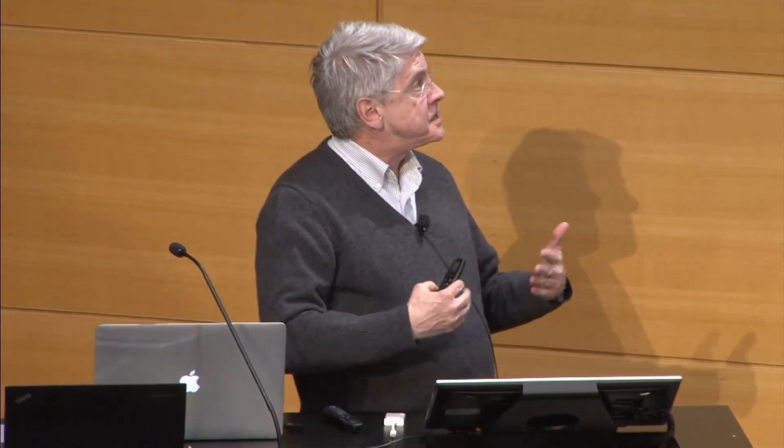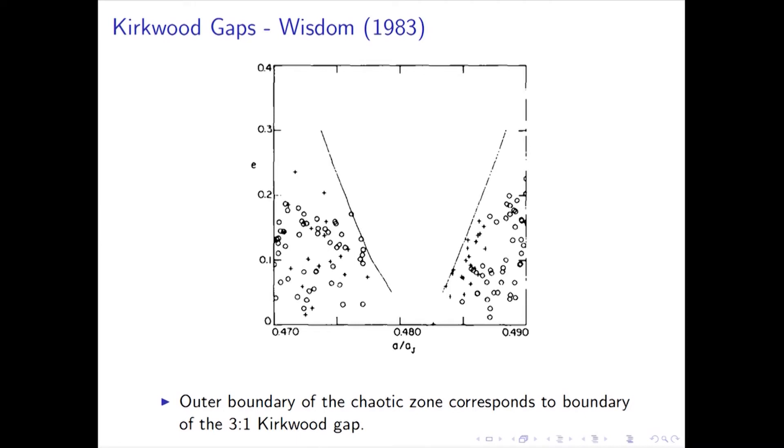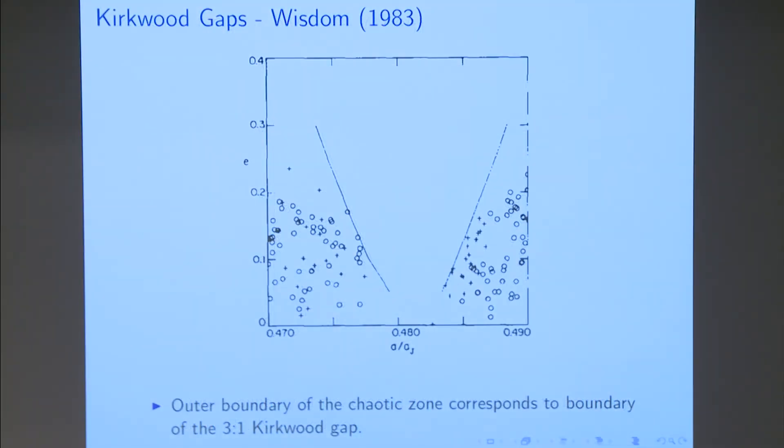This behavior was suspicious because it involved an expansion in eccentricities, and so it wasn't valid at high eccentricities. But this behavior has been thoroughly verified by subsequent numerical integrations. So here's the Kirkwood gap. This is eccentricity versus semi-major axis again. And these are the known asteroids at the time. And the lines mark the outer boundary of the chaotic zone. This is a realization of the divided phase space. And asteroids that are initially in this region are removed by collisions with the planets or the Sun. So this explained this 150-year-old problem.